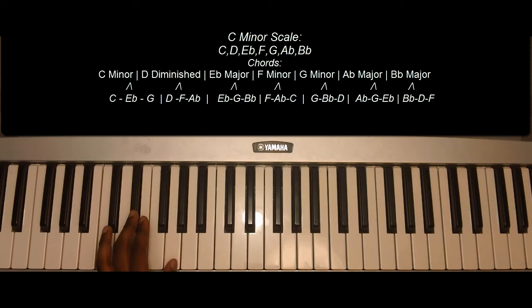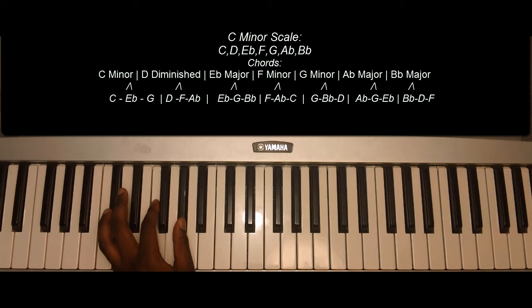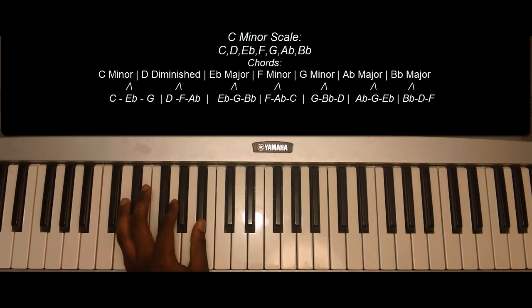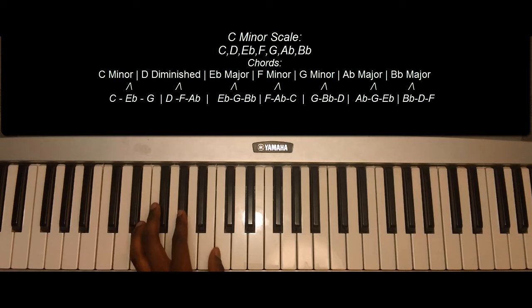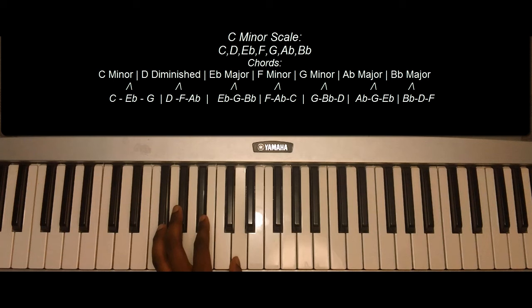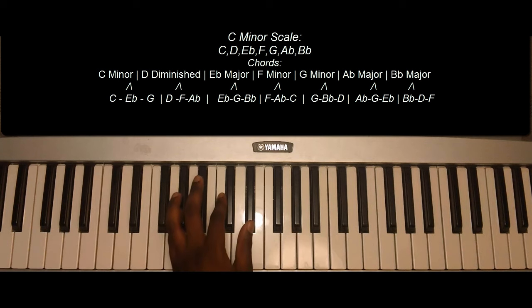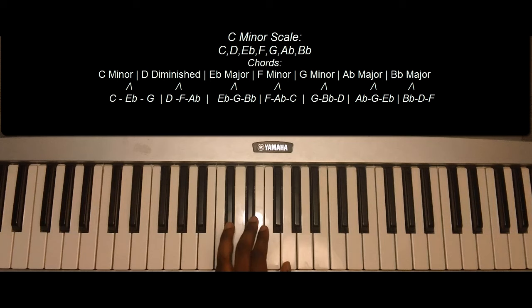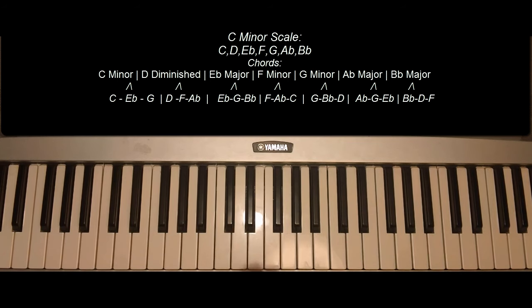So the chords again: C minor, D diminished, E flat, F, G, A flat, B flat, C. The C minor scale.